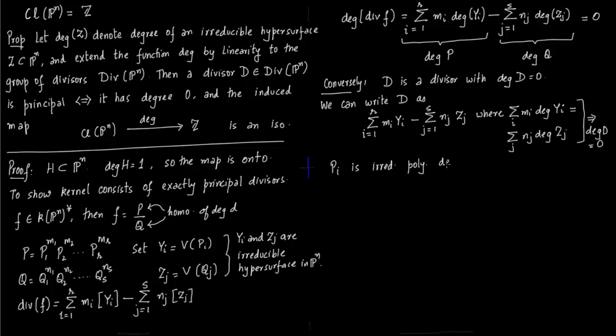Say P_i is the irreducible polynomial which defines Y_i, and Q_j is the irreducible polynomial which defines Z_j. Now you construct a polynomial P and polynomial Q. Polynomial P is just the product of P_1^M_1, P_2^M_2—all the polynomials which correspond to the irreducible codimension one hypersurfaces Y_1, Y_2, Y_3.